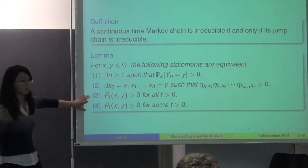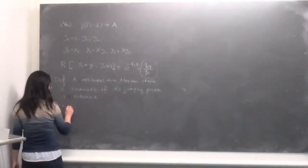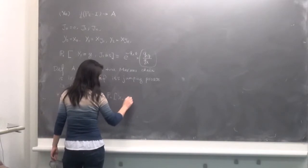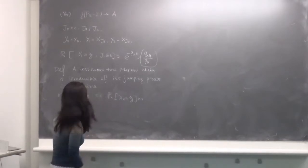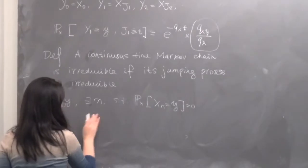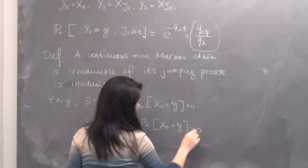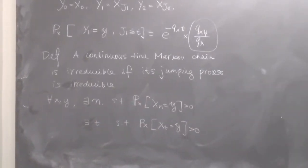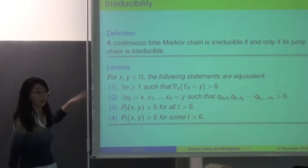In the discrete time case, we define irreducibility by saying that for any x, y there exists an integer n such that it is possible to jump from x to y in n steps. For continuous time, the analogous definition is: for any x, y there exists a time t such that it is possible to jump from x to y by time t. This lemma says these are all equivalent definitions.